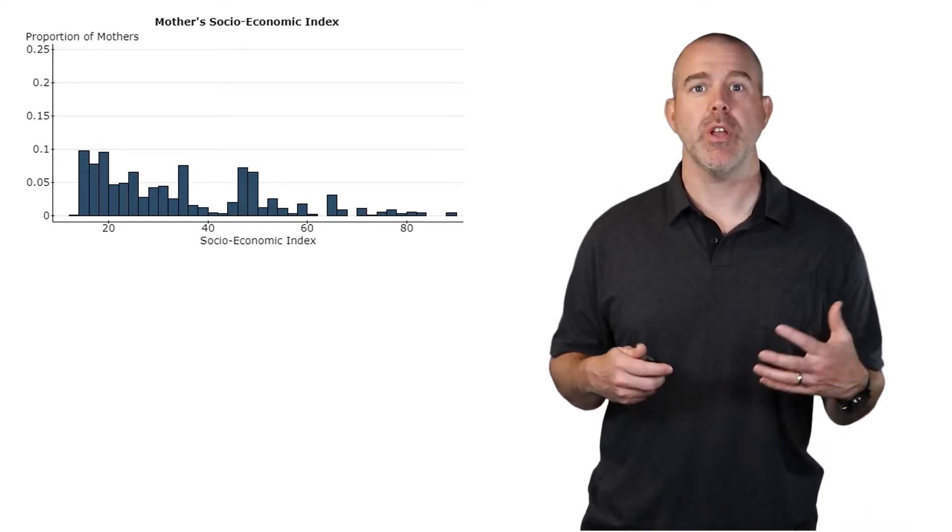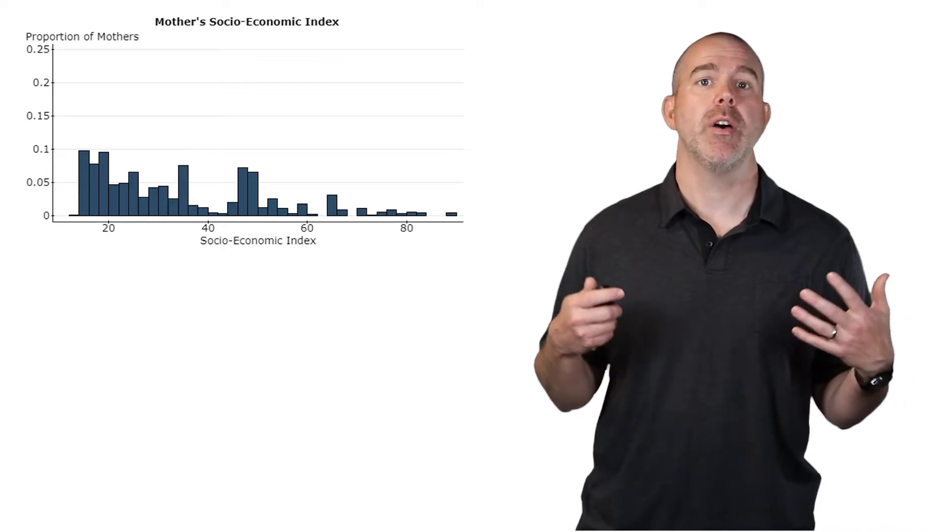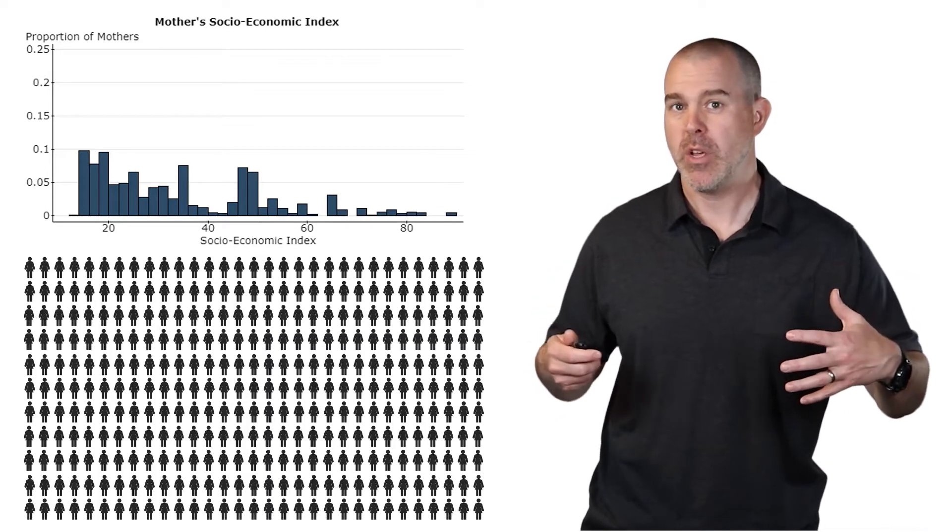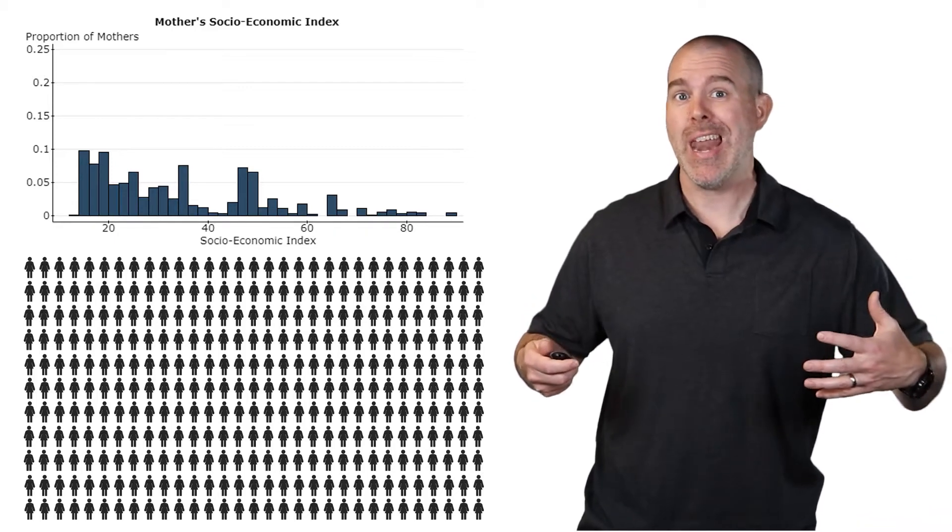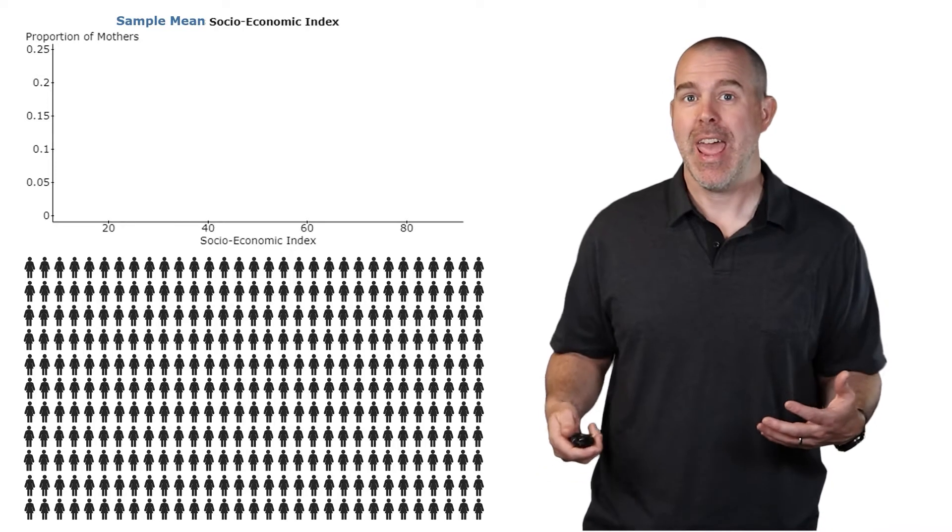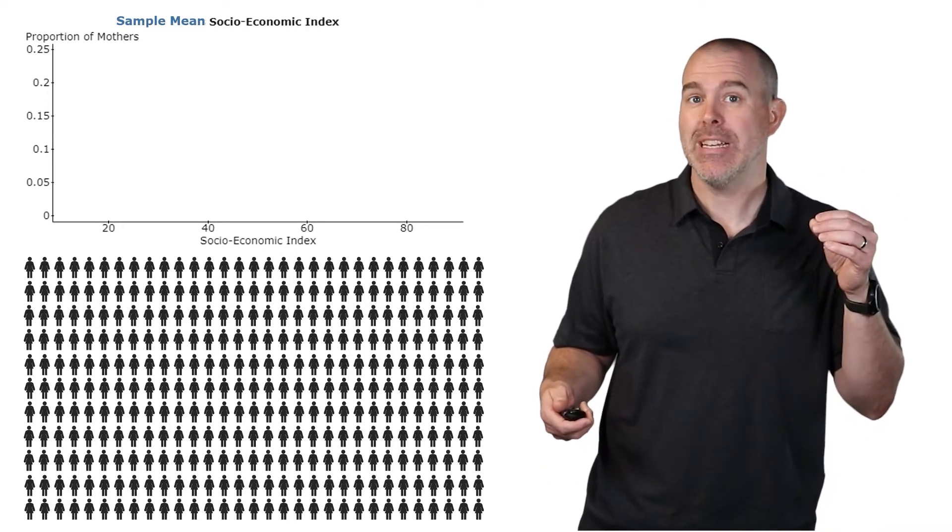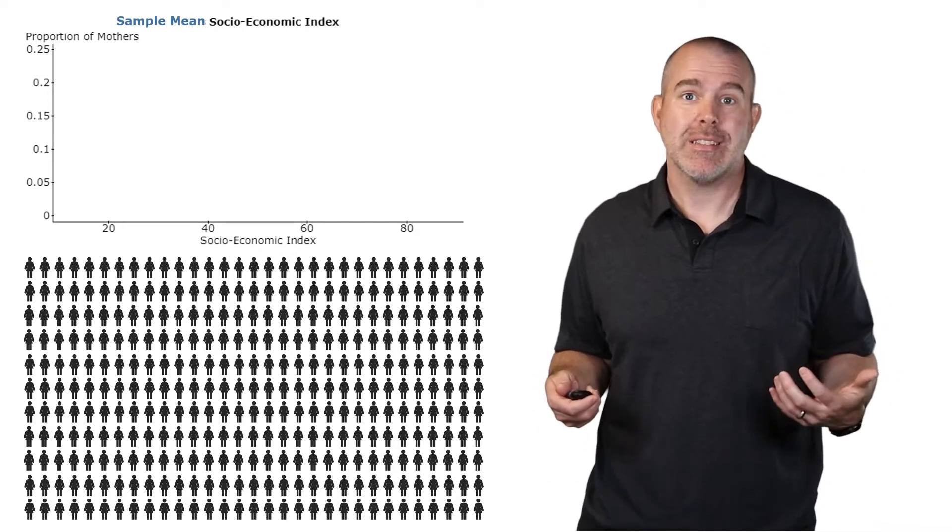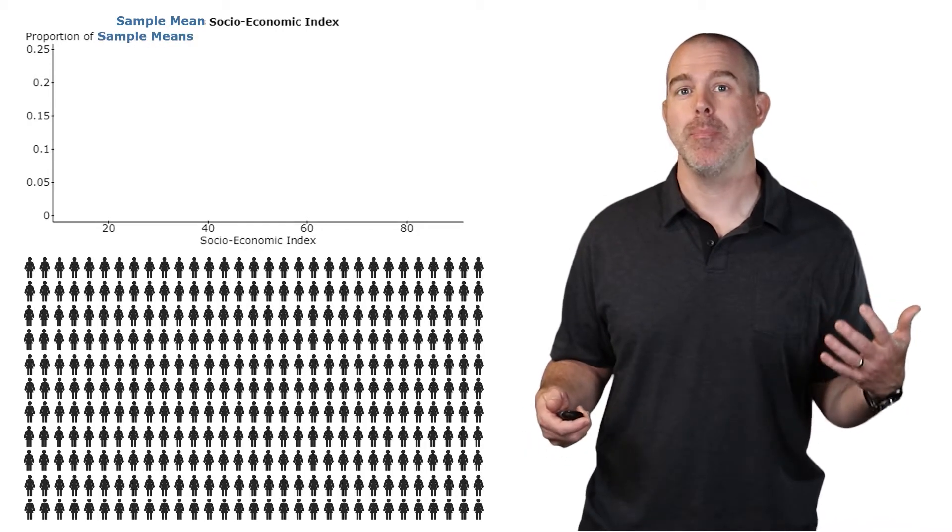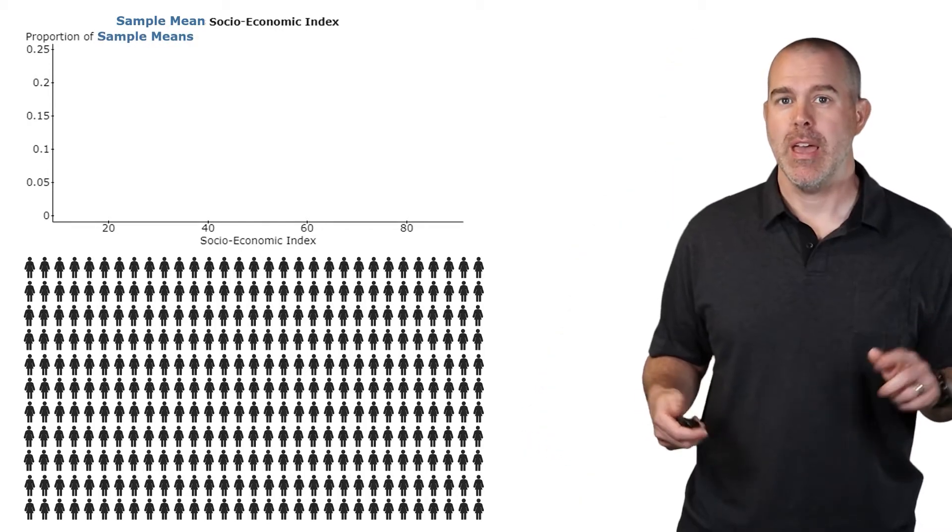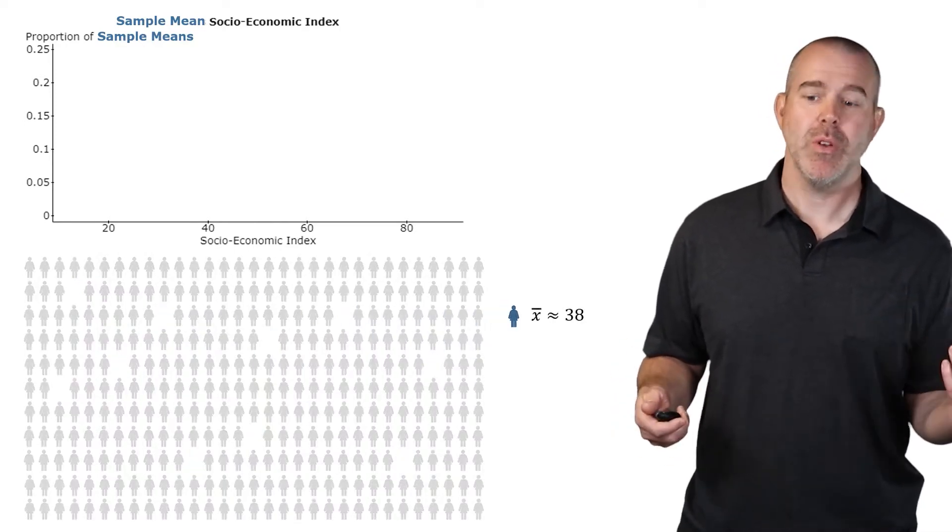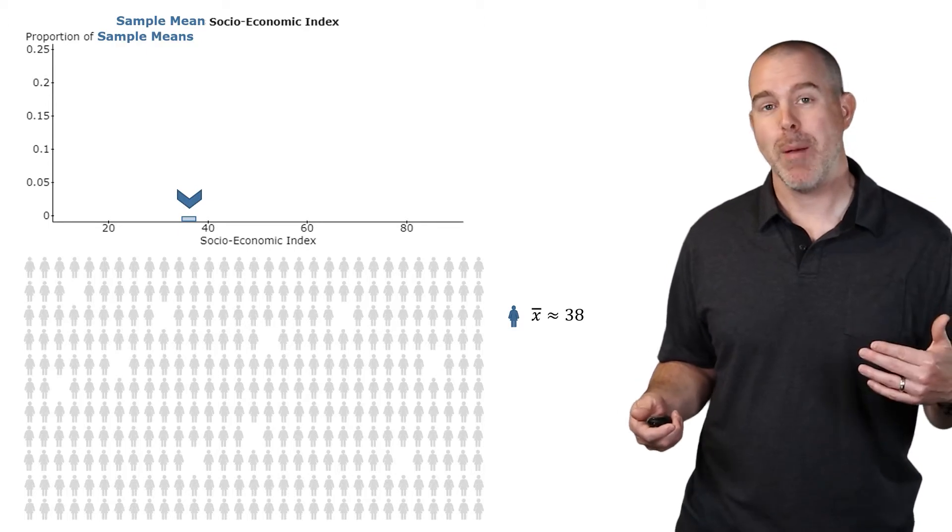What if we wanted to, instead of looking at the distribution of the mothers, what if instead we kind of have this visual to represent all of the mothers, and we look at samples, say a sample of size 10, and we look at the sample mean distribution. Our y-axis then, instead of the proportion of mothers, would be the proportion of sample means. We would take a sample, say this sample of size 10, compute its mean, we get 38, put that up on our histogram.